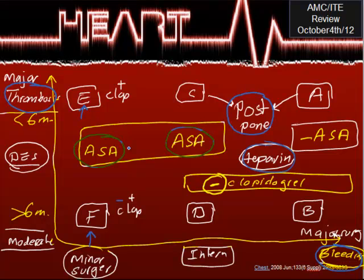To summarize for all cases: keep aspirin, with the only exception being major bleeding risk — typically neurosurgery — where you stop aspirin. For Plavix or clopidogrel: continue for minor surgery, stop for intermediate or major bleeding risk. I hope this is helpful — thank you.